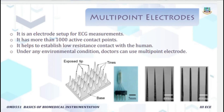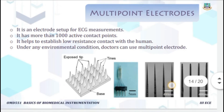The next type is the multi-point electrode, also used for ECG measurement. It has more than a thousand active contact points for generating the signal and establishing low-resistance contact with the human body. This electrode can be used under any environmental condition and is used without removing hair in the area where biopotential is being picked up.